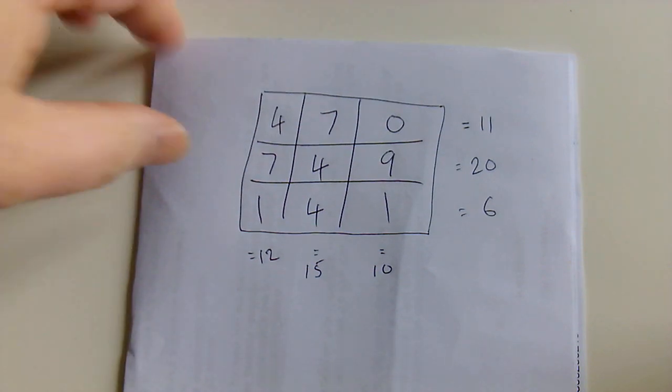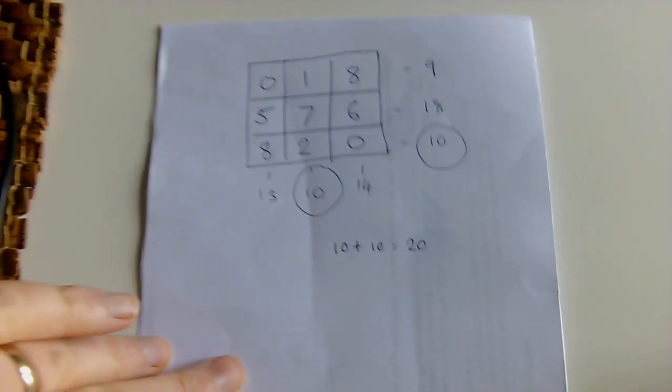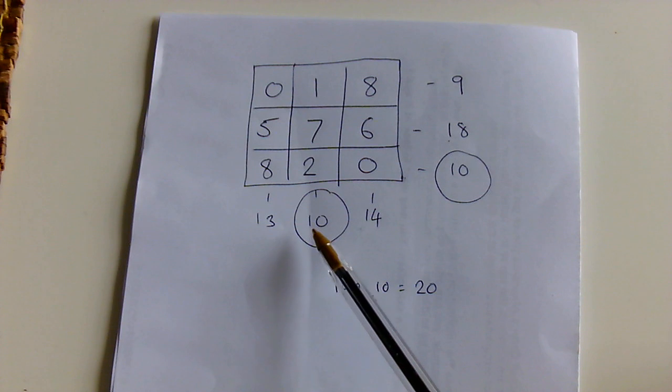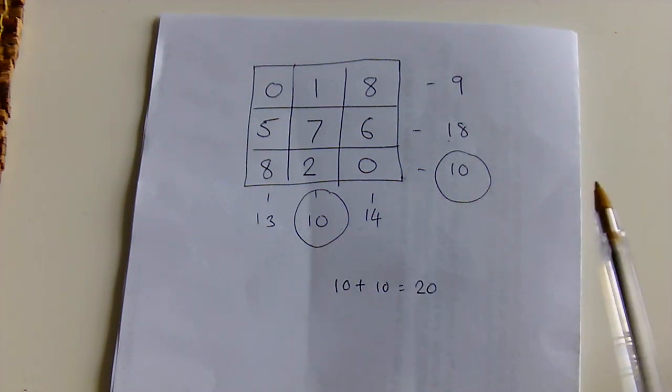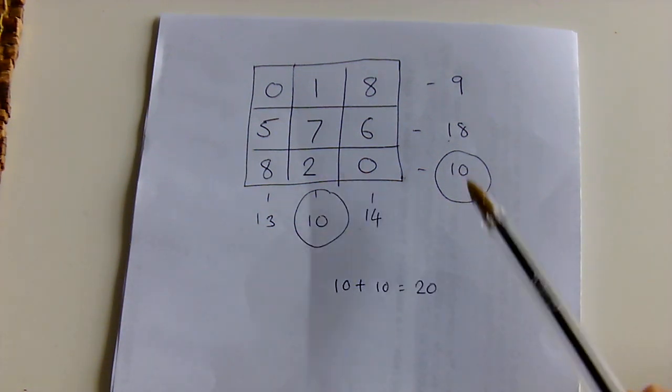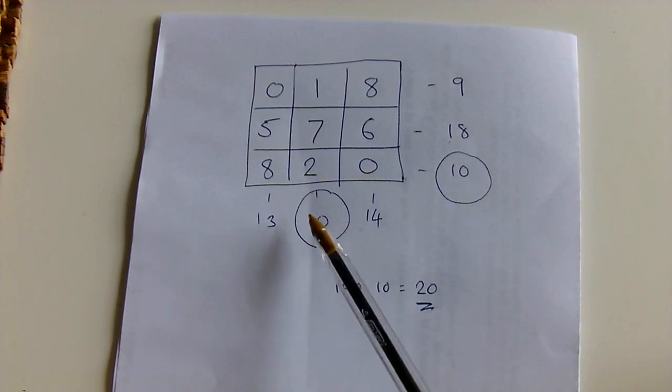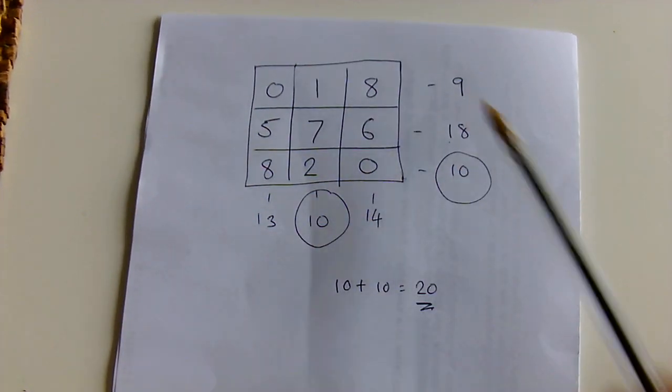But if I show you a game that I played earlier, as you can see here, on this game, we've got 2 lines that both add up to 10. I've circled those, and I add both of those up, and that is my total score for this game, 20. I only count the ones where there is a match.